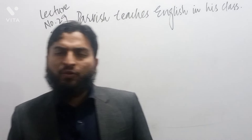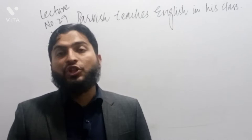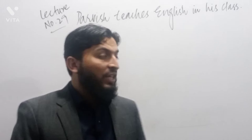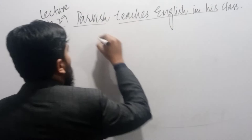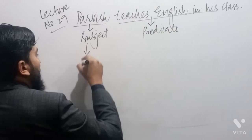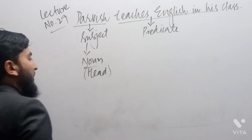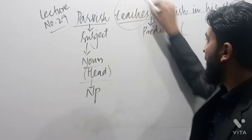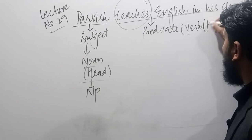Who teaches English? Darvesh. What does he do? He teaches. What does he teach? English. Where does he teach? In his class. In this sentence, 'Darvesh' is the subject and 'teaches English in his class' is the predicate. Darvesh is a noun used as head, making it a noun phrase. The predicate starts with a verb, so the verb is the head — making it a verb phrase.